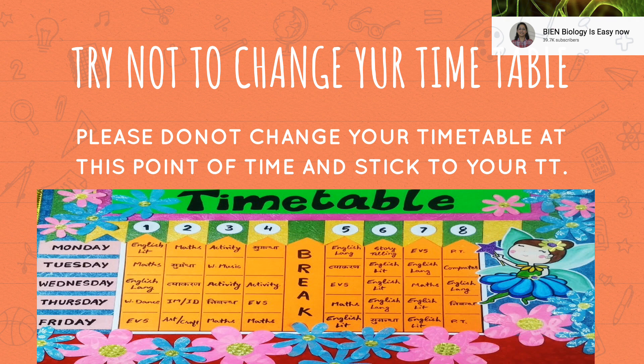The sixth pointer: try not to change your timetable. Stick to the timetable you've framed for syllabus completion — please do not change it at the last minute. For example, if you planned to revise something from June 1st to 3rd but couldn't finish, don't change your whole timetable. Instead, stick to it and leave some buffer space at the end for earlier topics to be revised.